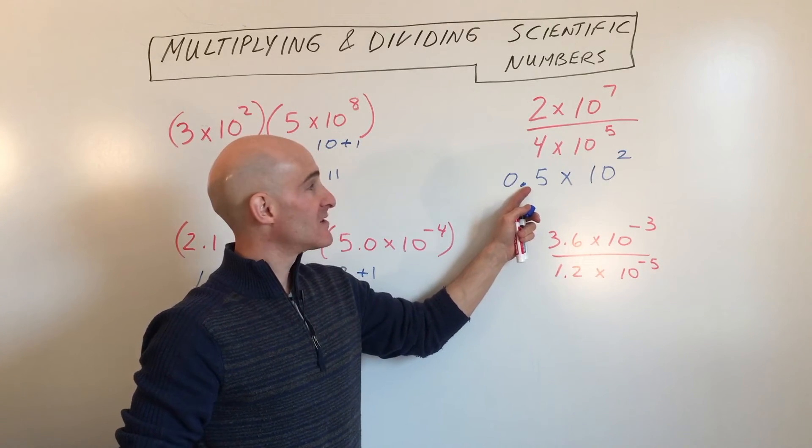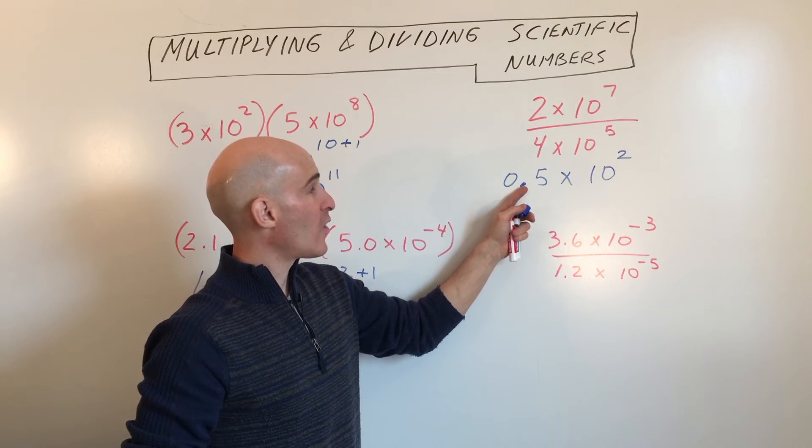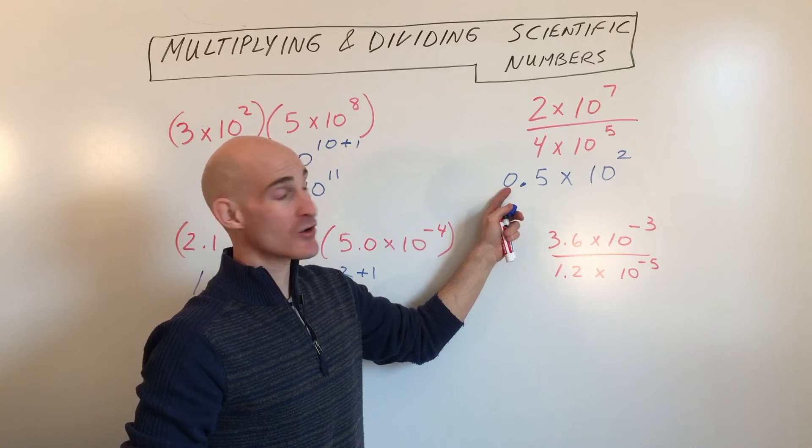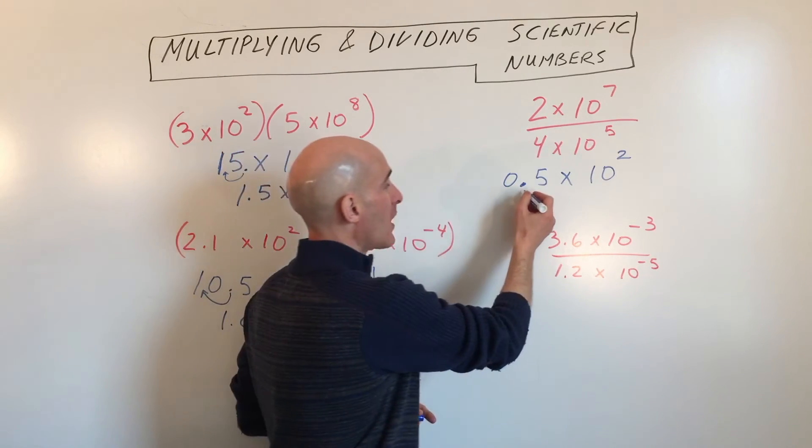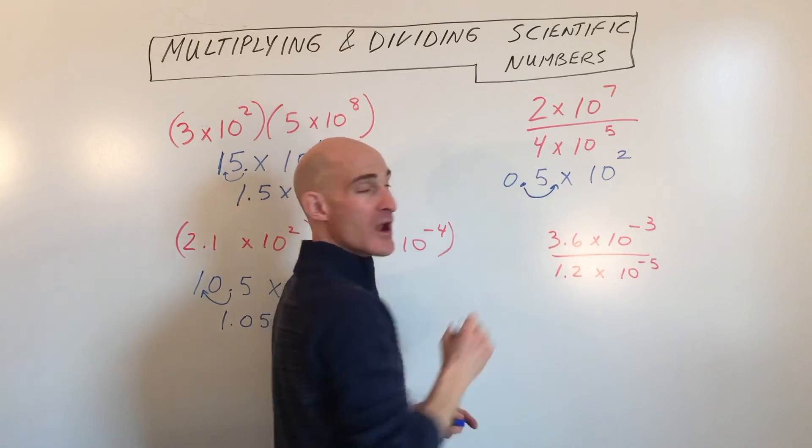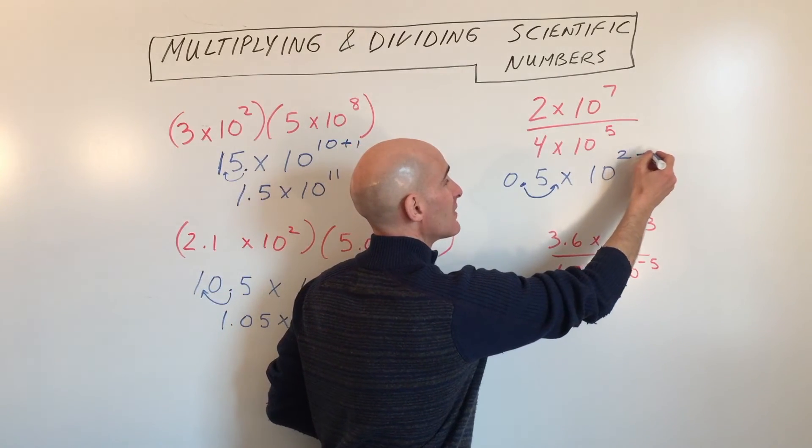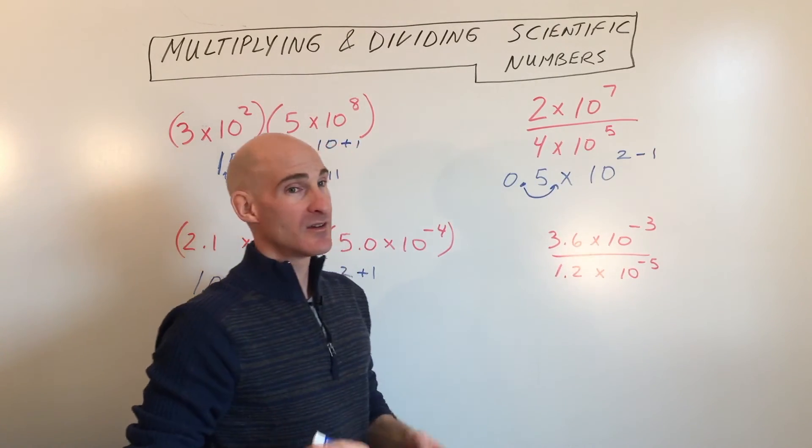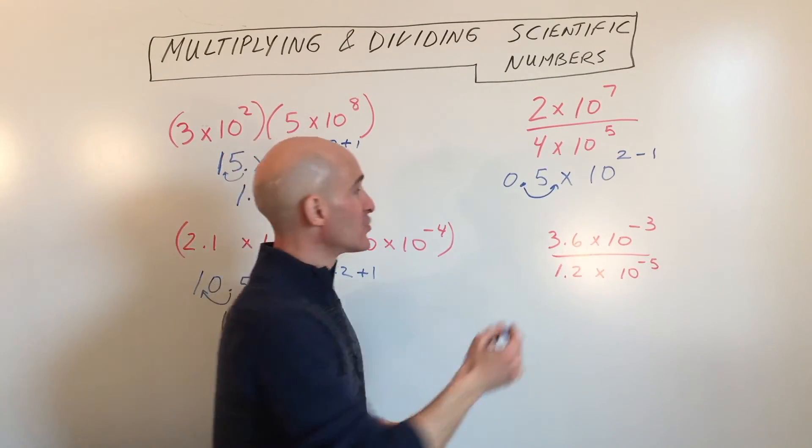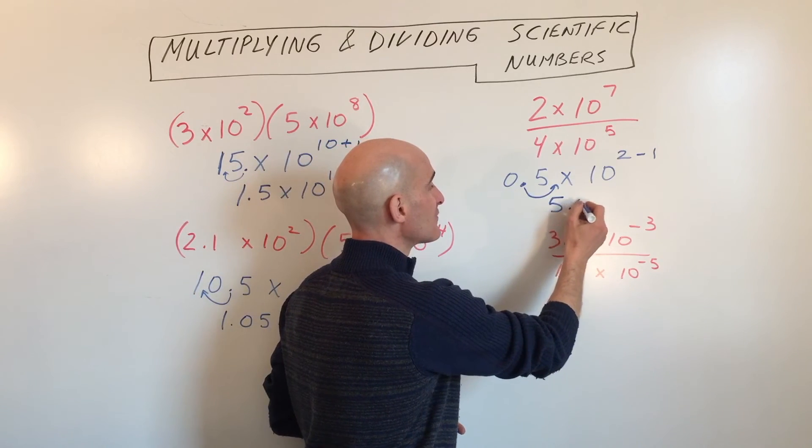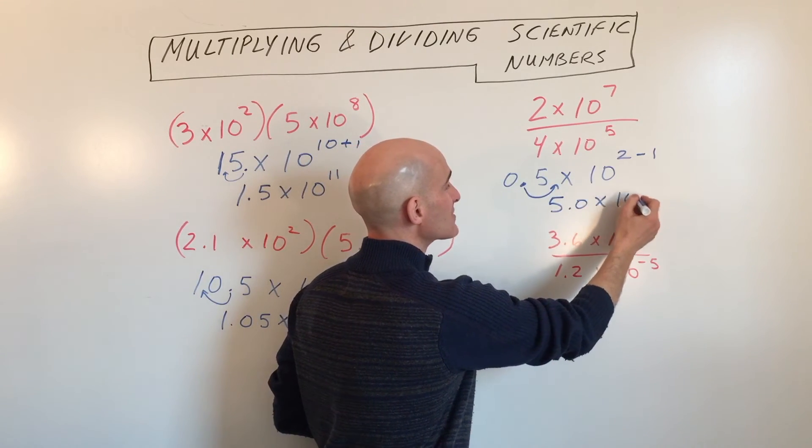But you can see this, again, is not in scientific notation. We want a single non-zero digit in front of the decimal point. So I'm going to move that decimal one place to the right, making this larger by a power of 10. So to counterbalance that, I'm going to subtract 1 to counterbalance, so we don't change the overall value of the numbers. So that gives us 5.0 times 10 to the first.